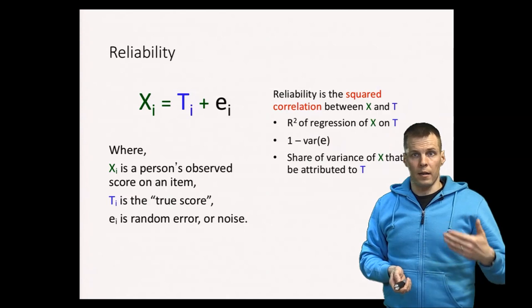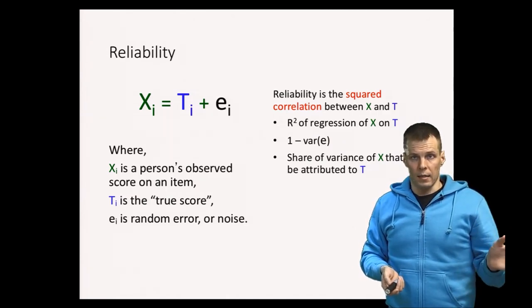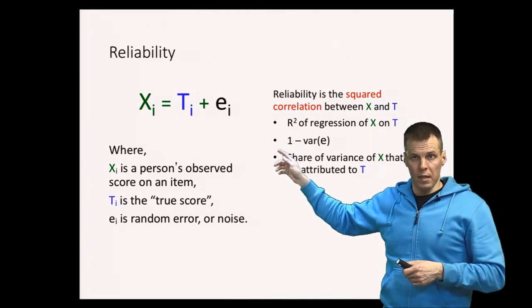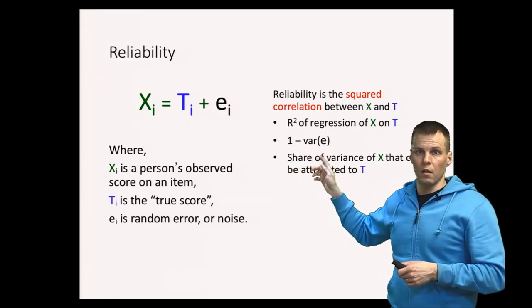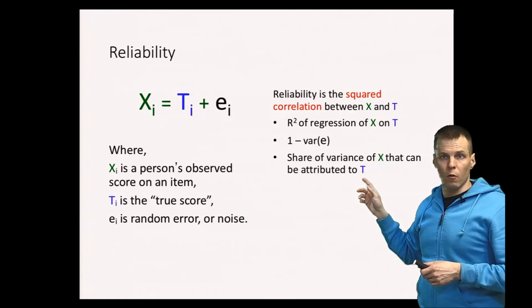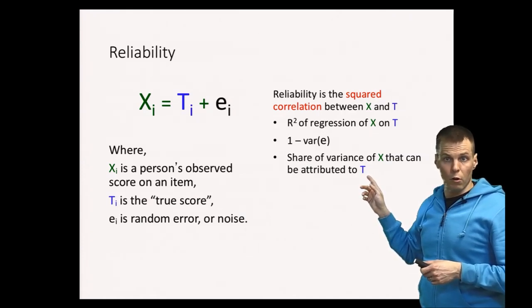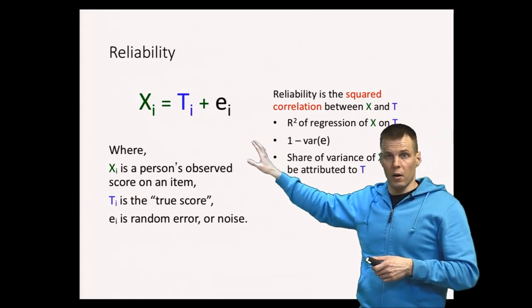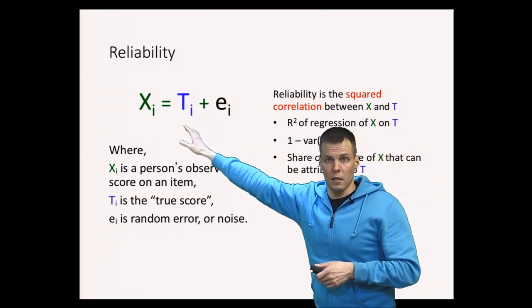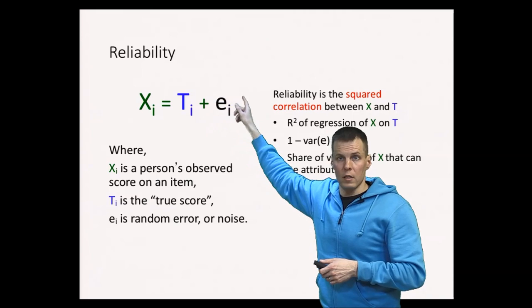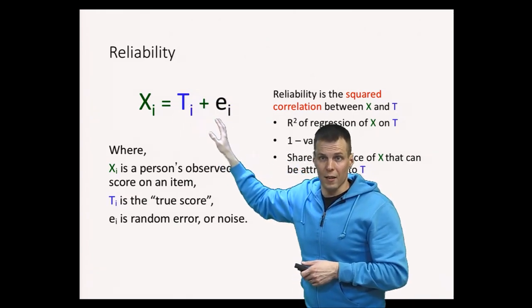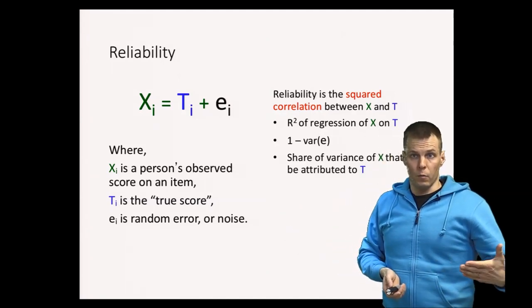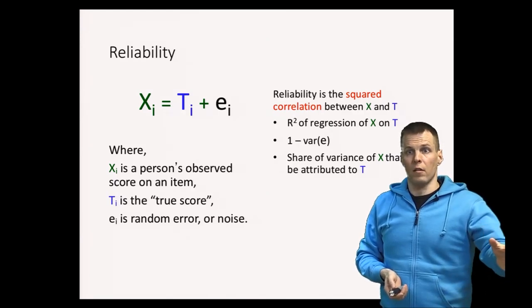Reliability is defined as the squared correlation between X and T, or R squared of regression of X on T, or if we have standardized estimates, 1 minus variance of e, or the share of variance of measured scores X that can be attributed to the true score T. So basically it is how large a share of our observed variance is due to the random noise and how much is due to the true score. So it's like a signal to noise ratio. The reliability is simply defined that way, the ratio of our true score variance to total variance.